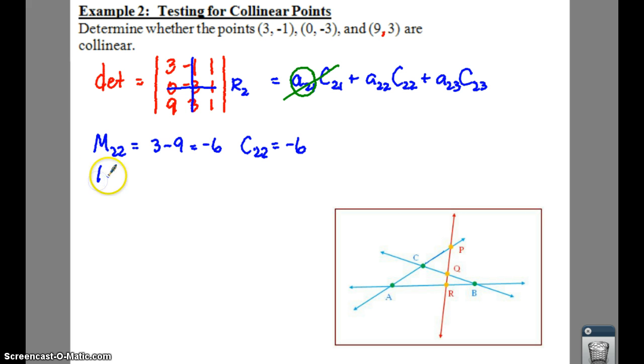So now let's do two, three. So that means I need to get rid of row two and column three. So I have three, negative one, nine, and three. Sorry, can't erase that or else it would just be gone. All my numbers would be gone. It would be travesty.